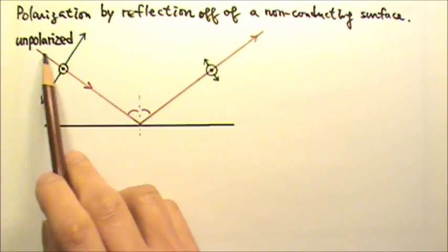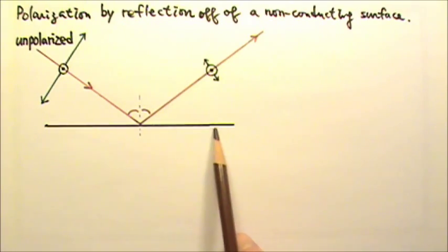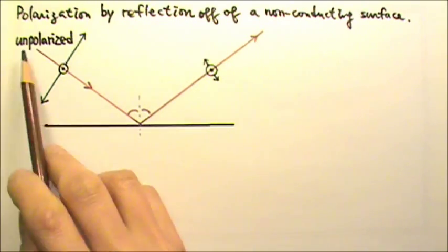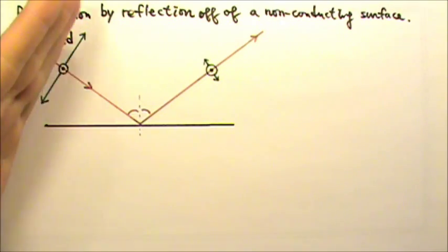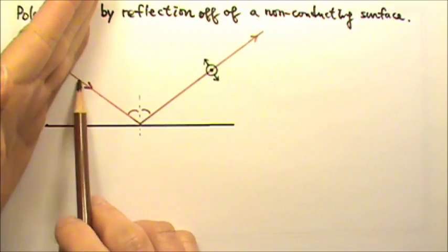Let's look at an unpolarized light beam getting reflected by this horizontal surface. An unpolarized light has electric field oscillating in all directions perpendicular to the velocity of the beam.